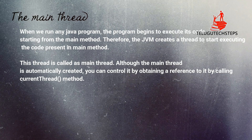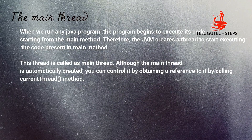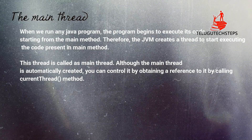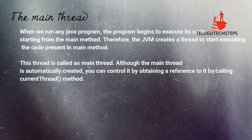Let's see about the main thread. When we run any Java program, the program begins its execution. The JVM creates a thread to start executing the code present in the main method. The JVM creates a thread to start executing the code from the main method — this thread is called the main thread.